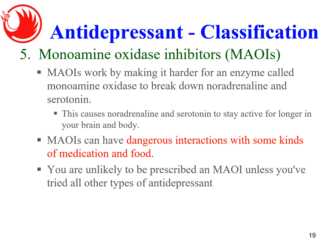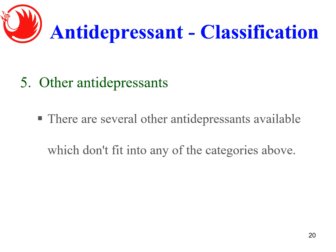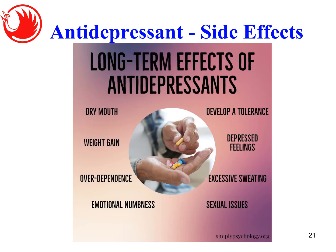MAOIs work by preventing the breakdown of the two hormones mentioned, giving a better effect on the body. However, they can be dangerous as this class of drug interacts with some medicines and foods, so doctors are unlikely to prescribe MAOIs unless other types of anti-depressants are not working. Number five is other anti-depressants — several others that are not classified under the first four categories. Side effects of anti-depressants include dry mouth, weight gain, over-dependence when used long-term, emotional numbness, developing a tolerance so the drug no longer works, depressed feelings despite it being an anti-depressant, excessive sweating, and even effects on sexual function.